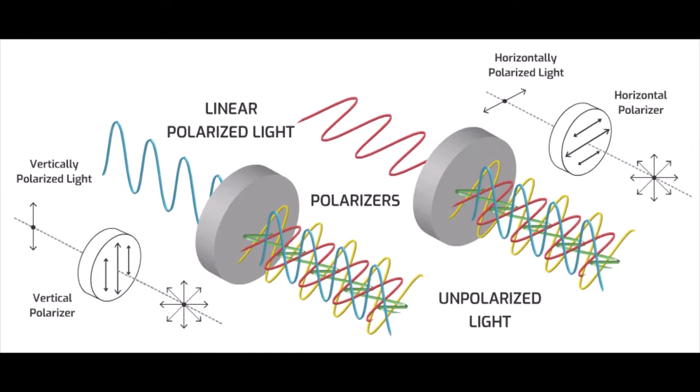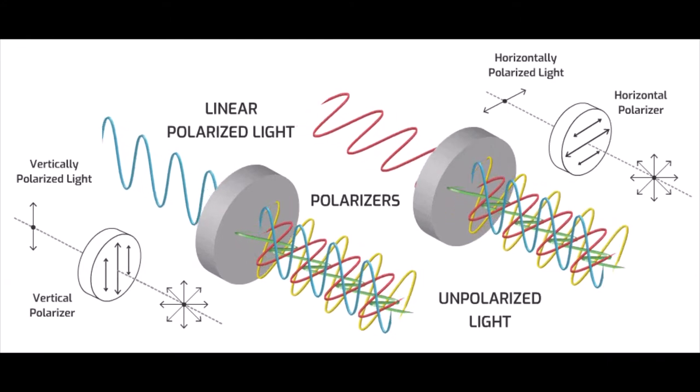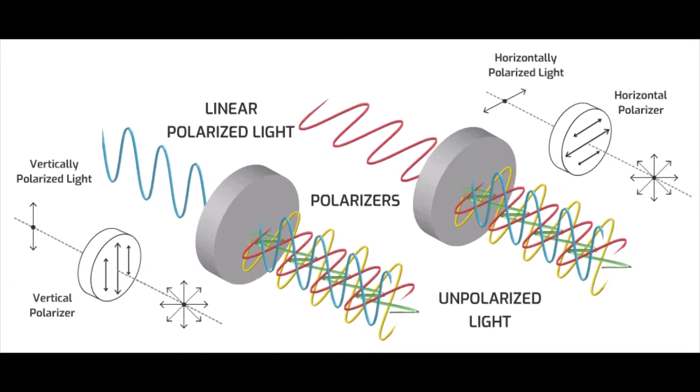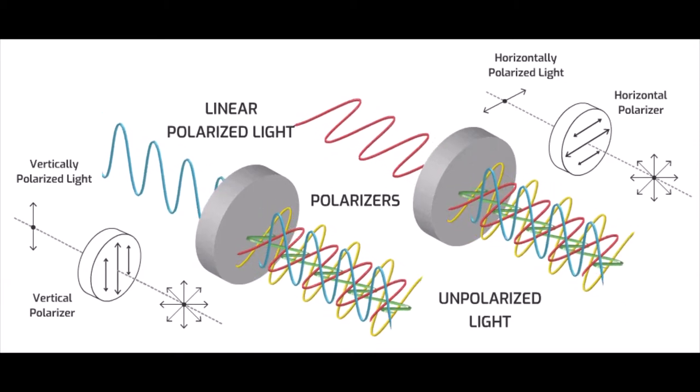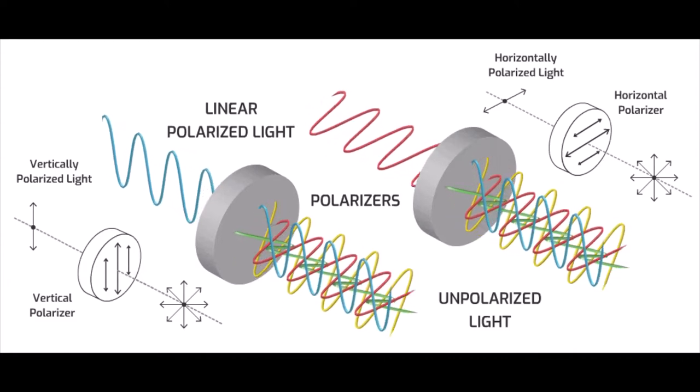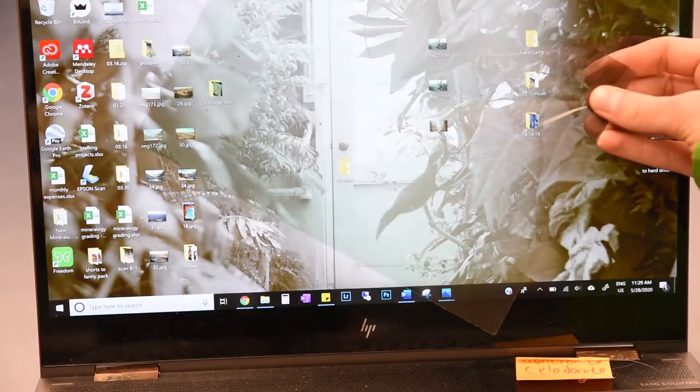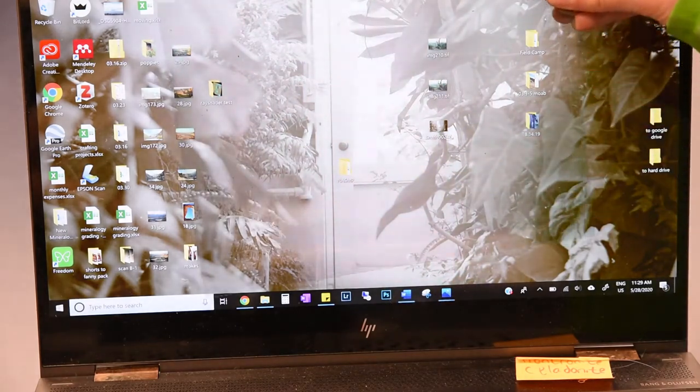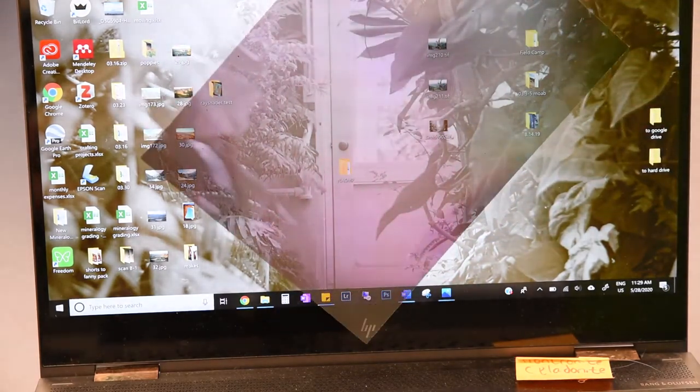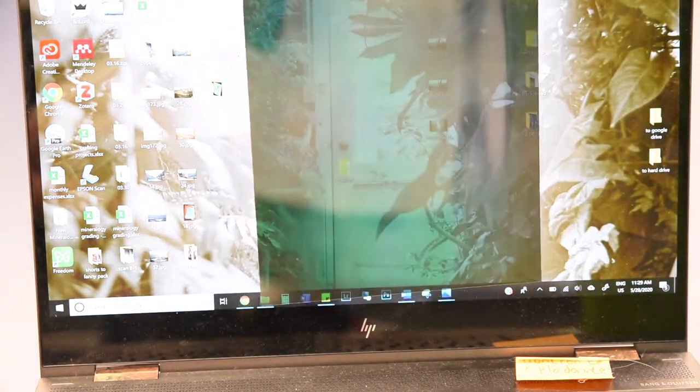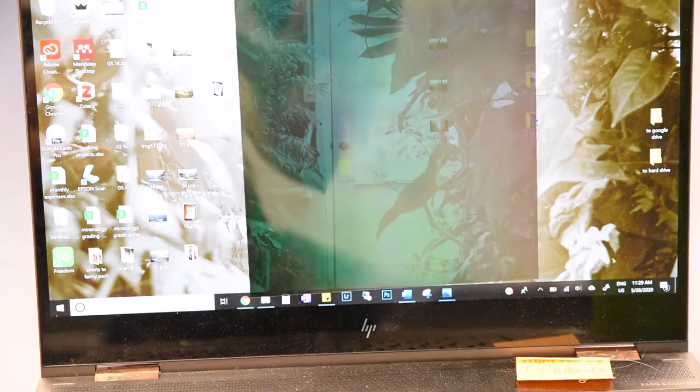Light consists of wavelengths that move in multiple directions. A polarizer, shown as the gray disc in this animation, cuts out the different wavelengths and only allows light to move in one direction. For example, many sunglasses have polarizing filters to protect your eyes. Since it cuts down on light from different directions, you may have noticed that screens like phones or TVs are difficult to look at while wearing these glasses.